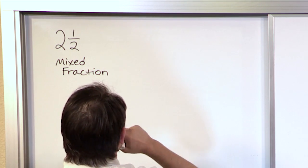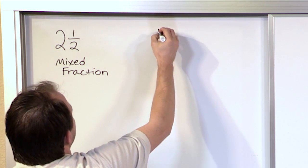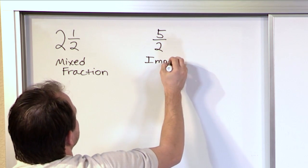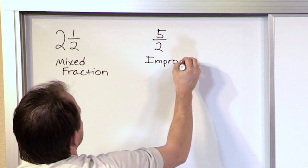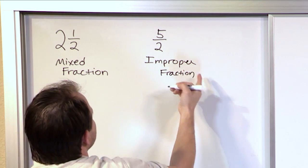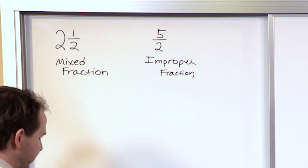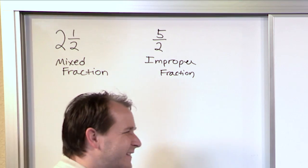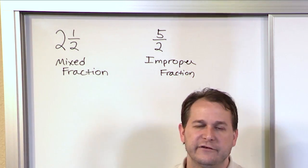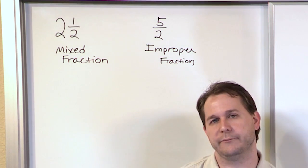Something we talked about a couple of lessons ago is something we call an improper fraction. The reason it's improper is because the numerator is bigger than the denominator. Mixed fractions like 2 1/2 represent when you have something more than one whole object.